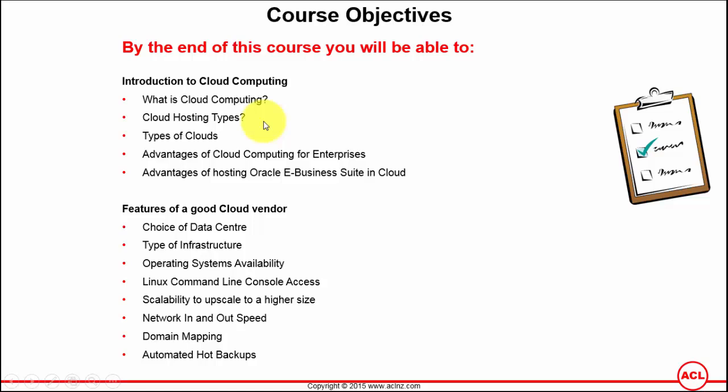Then we'll move on to the features of how to identify a good cloud vendor. I'm going to cover a number of features that make a good cloud vendor, such as the cloud data center, the type of infrastructure offered by the vendor, and the operating systems availability.